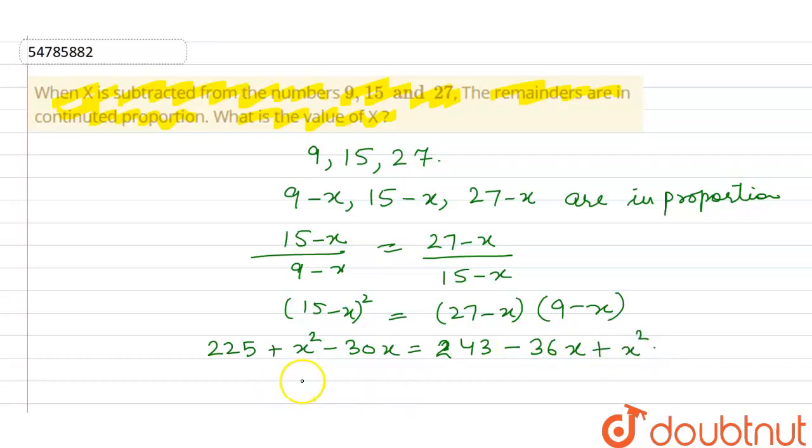So abh hum isko solve karte hain, x square se x square cancel ho jayega. Aur minus 30, minus 36 jo idhar aake add ho jayega, to yee aapka ho jayega 6x is equal to 18. 243 minus 225 ayega 18. To x ki value aapke paas aagayi 3. Aapko x ki hi value nikalni thi. Thank you.